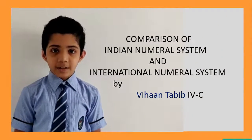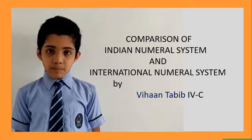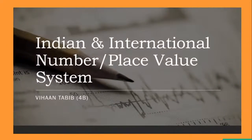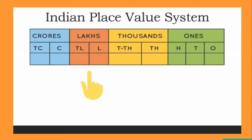Hello everyone. I am Bihar Tabeep. Today I will be talking about the Indian and international place value systems. In the Indian numeral system, places are grouped into ones, thousands, lakhs, and crores. The first period is ones, consisting of three place values: ones, tens, and hundreds. The second period is thousands, consisting of two place values: thousands and ten-thousands. The third period is lakhs, consisting of two place values: lakhs and ten lakhs. The fourth period is crores, consisting of two place values: crores and ten crores.